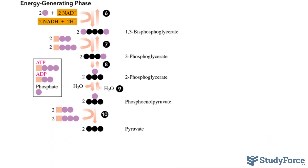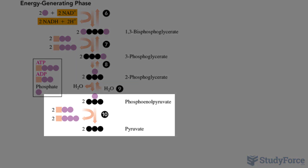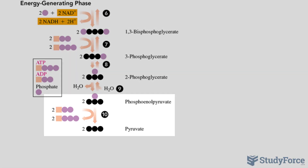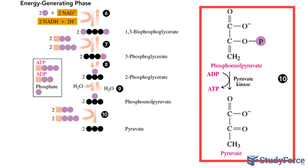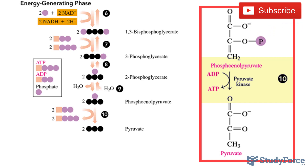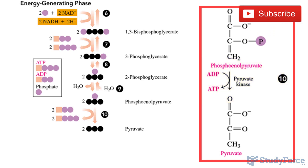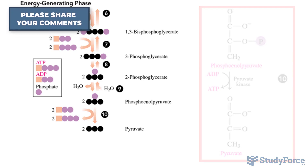Finally, for C, pyruvate kinase. In reaction 10, which is the last reaction in glycolysis, phosphate groups from two phosphoenolpyruvate molecules are transferred by pyruvate kinase to produce two pyruvates and two ATP molecules. High levels of ATP or acetyl-CoA, which is a molecule that's produced from pyruvate, inhibit pyruvate kinase, and this stops the formation of more pyruvate.